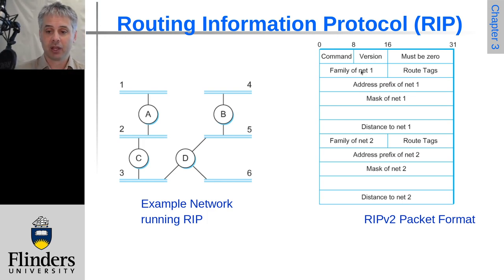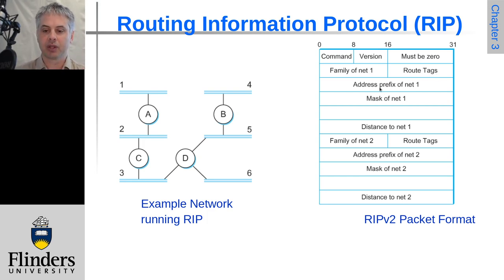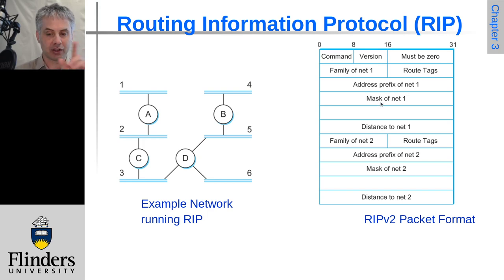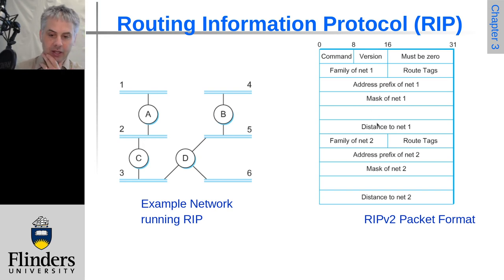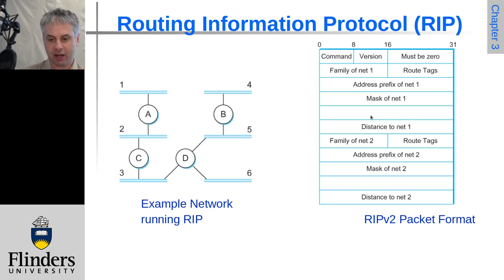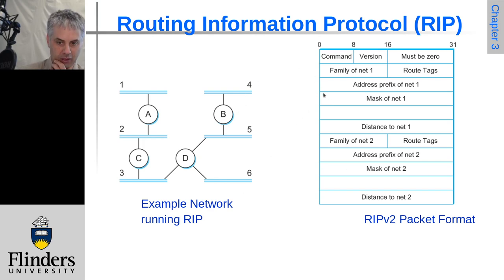It says what the network type is and might have some tags and information. Then it says what the prefix of the network is and the mask — this is identifying the network number. Then it will have the distance it believes, so the cost to get to that network, and then it repeats that for the next one, and so on. This is a very simple way to communicate that routing information.